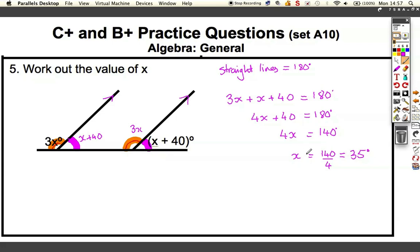We can check this answer's right, because we can put it back in here and check these add up to 180. We've got our answer at 35 degrees. 3 times 35 is 105, and 35 plus 40 makes 75, and those two do add up to 180, so we're correct.